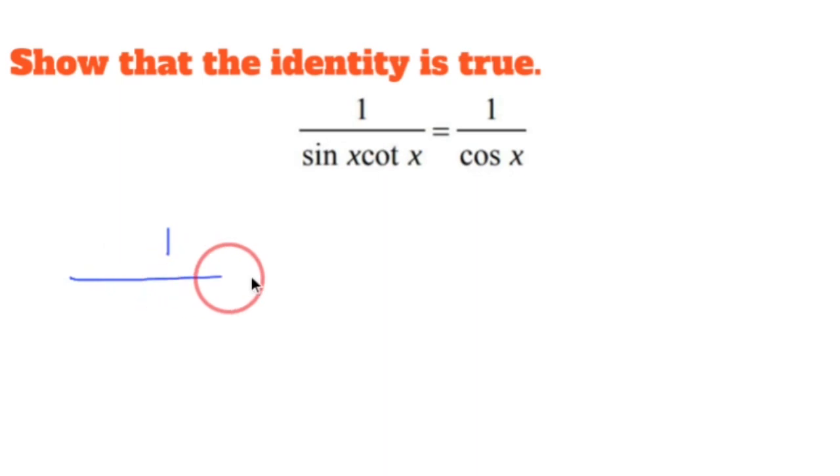So basically the best thing to do is whenever you see sines and cotangents floating around is to break it down to its simplest part. Sine x is sine x, can't really change that.